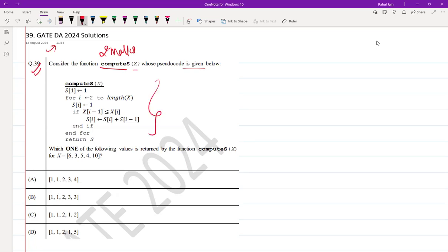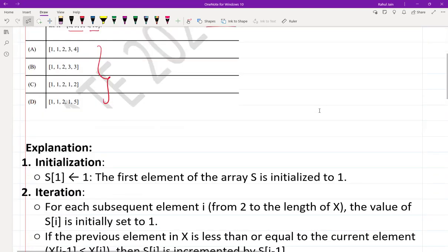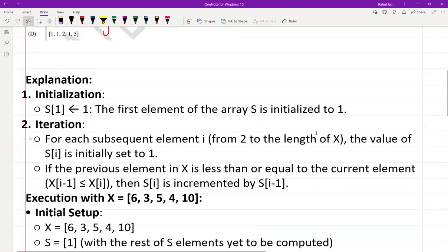Which one of the following values is returned by the function computeSx for x equal to [6, 3, 5, 4, 10]? Four options are given. Here is the step-by-step solution. In the particular code, you just need to map the line.